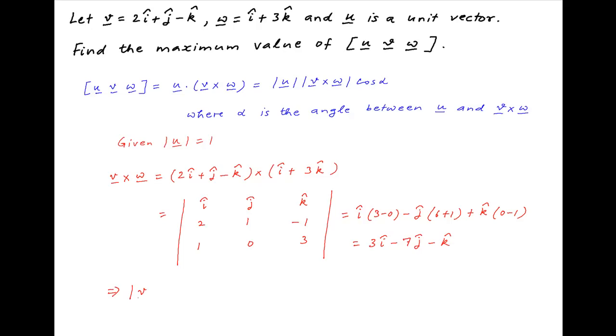Therefore, the absolute value of vector v cross w is equal to the absolute value of 3i minus 7j minus k, which is equal to square root of 3 squared plus minus 7 squared plus minus 1 squared, which simplifies to square root of 59.